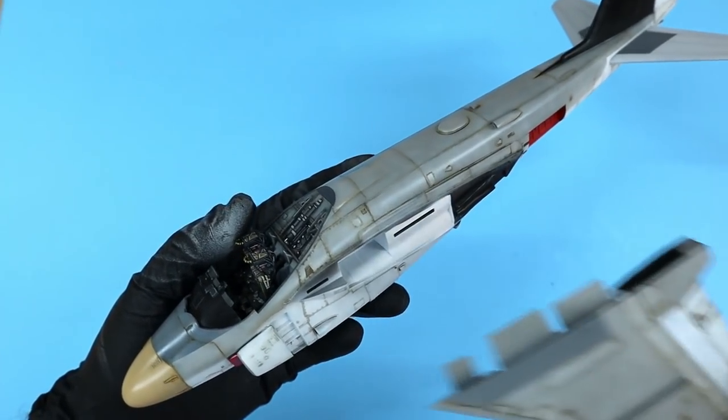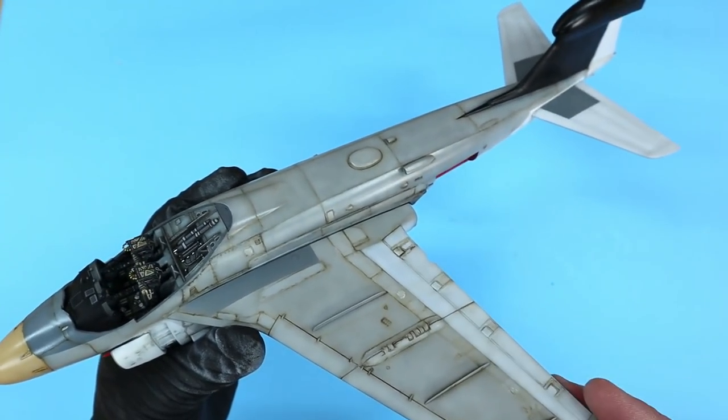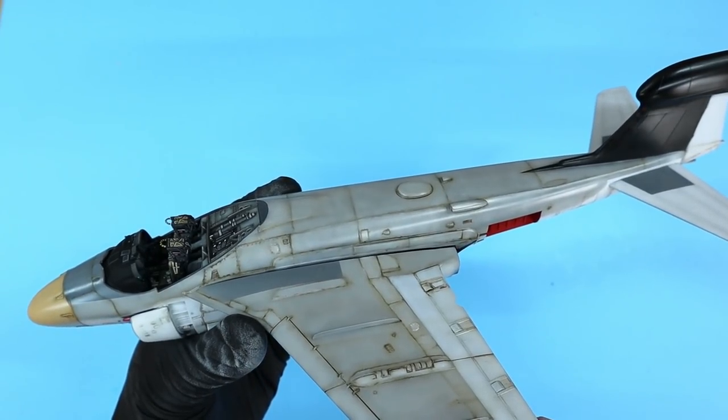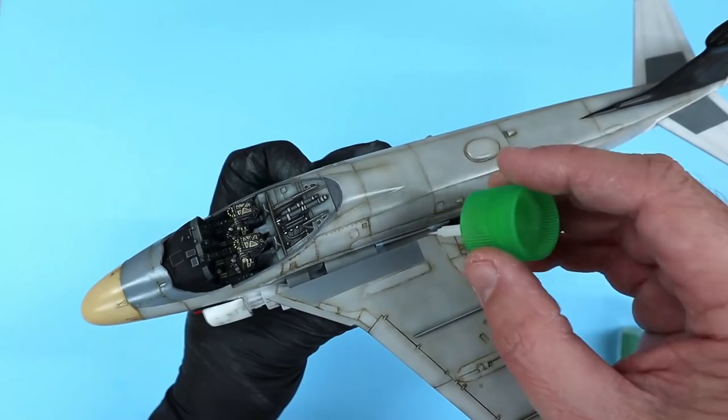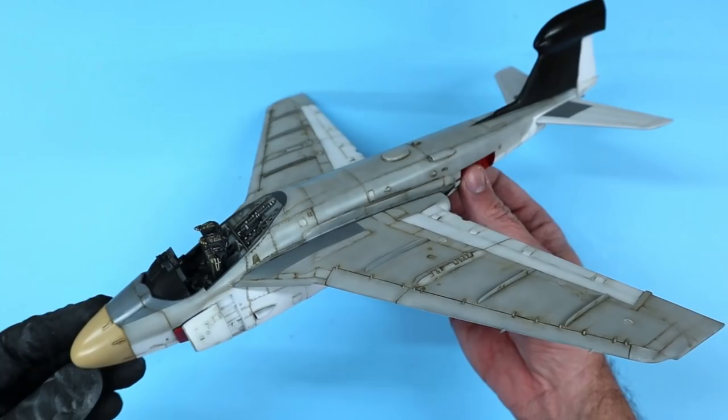I had test fitted the wings to the fuselage earlier so I could see that the fit was going to be decent. This is what gave me confidence that I could airbrush and weather them separate from the fuselage and install them later. I plugged the wing tabs into the fuselage insert slots and glued everything in with more of that Tamiya cement.